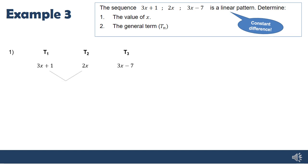I'm going to write up my number pattern with those three expressions. Then I take the difference between terms: term 2 minus term 1 is 2x minus (3x + 1), and term 3 minus term 2 is 3x - 7 minus 2x. Because it's a linear pattern with constant difference, these two differences must be equal, giving me one equation with one unknown x.